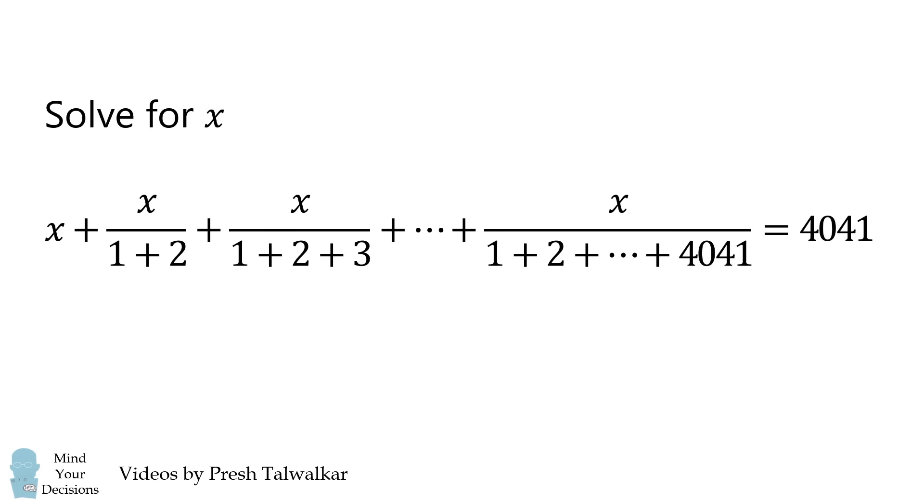Solve for the value of x in the following equation. The first term is x. The second term is x divided by 1 plus 2. The third term is x divided by 1 plus 2 plus 3. This pattern continues until the final term, which is x divided by 1 plus 2 plus so on all the way up to 4041. The entire sum is equal to 4041.